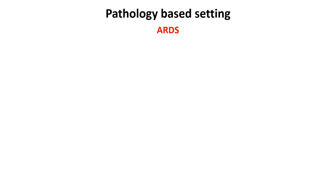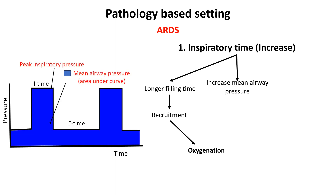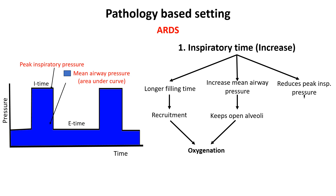Let's look at how to set them in ARDS. In ARDS, where hypoxemia is a major concern, the goal is to enhance alveolar recruitment while minimizing ventilator-induced lung injury. Prolonging inspiratory time in ARDS enhances lung recruitment by allowing more time for alveoli to fill with air. A longer inspiratory time also increases mean airway pressure — the average pressure applied to the airways throughout the respiratory cycle — which improves oxygenation by keeping alveoli open longer. Additionally, increasing inspiratory time reduces peak inspiratory pressure, reducing the risk of barotrauma.